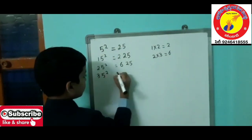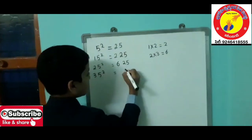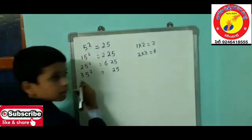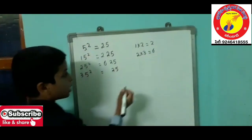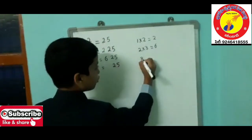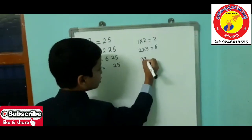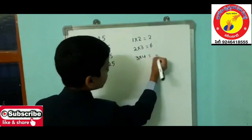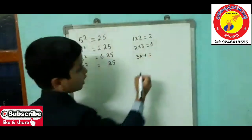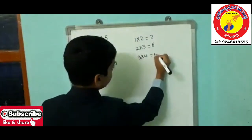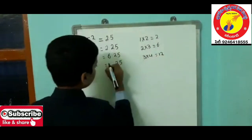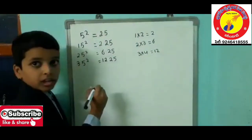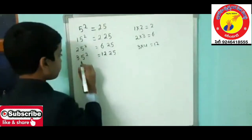For 35 squared: 5 squared is 25, and the tens digit is 3. The next number after 3 is 4, so we multiply these both numbers — 3 times 4 is 12. Therefore 1225 is the square of 35.